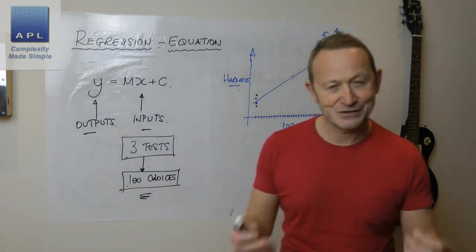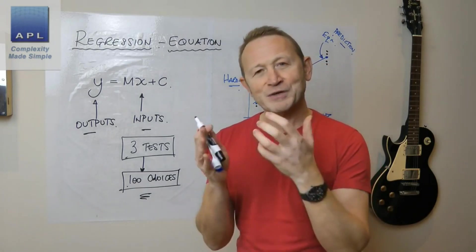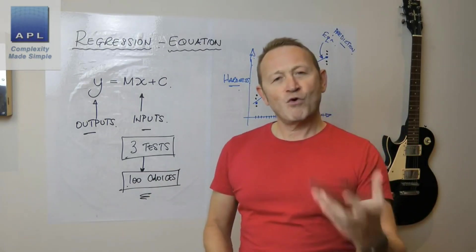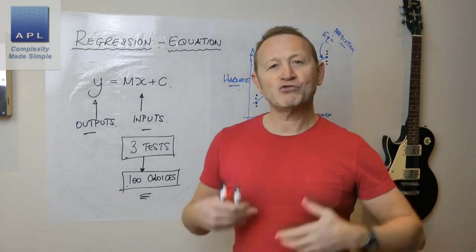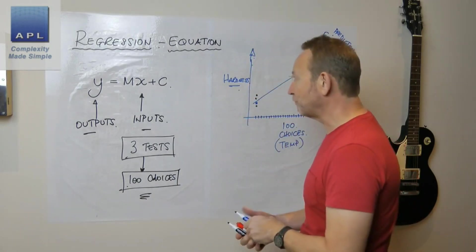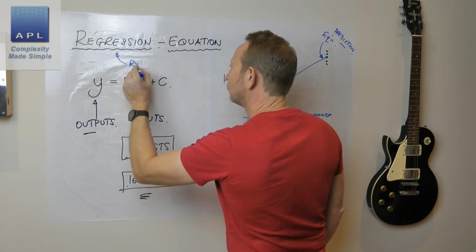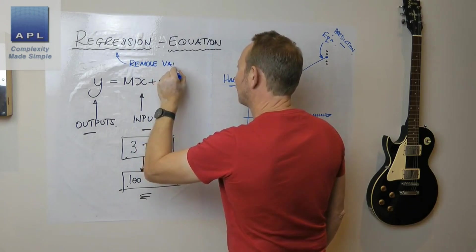And that is the power of regression. Now, some important points about doing this before you go and do any kind of work on a process. Before you try to get knowledge, the first thing you've got to do before you go do regression: you have to remove variability.